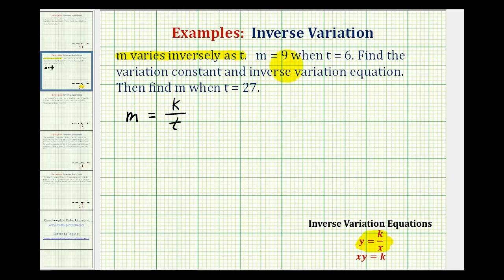We're also told m equals nine when t equals six. Then we're asked to find the variation constant, the inverse variation equation, and then m when t equals 27.